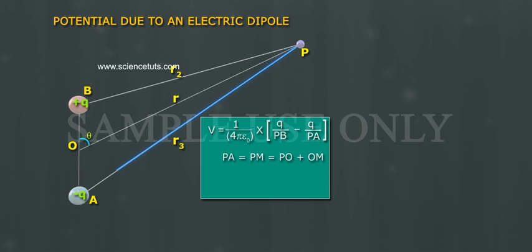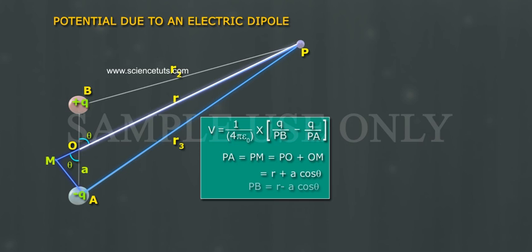From the figure, PA is equal to PM is equal to PO plus OM is equal to R plus A cos theta. Similarly, PB is equal to R minus A cos theta.